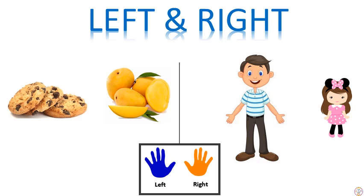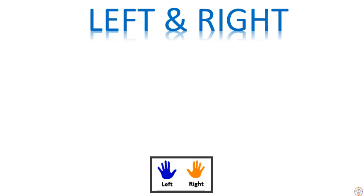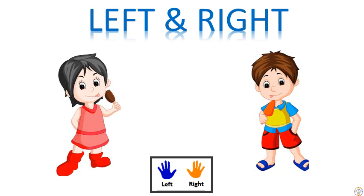In the second set of pictures, guess which one is at the left and which one is at the right. Yes, the father is at the left and the little girl is at the right. Now let's have a guessing game. In the given set of pictures you have to find out who is at the left and who is at the right. Yes, the girl is at the left and the boy is at the right.